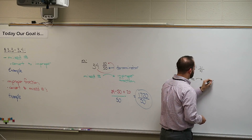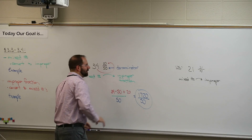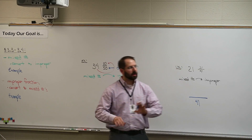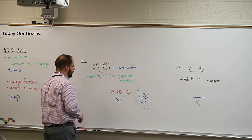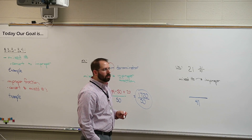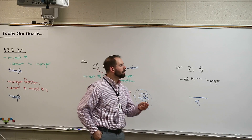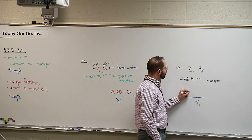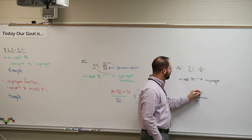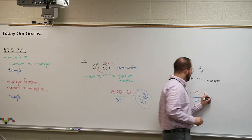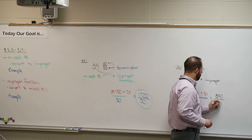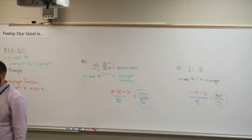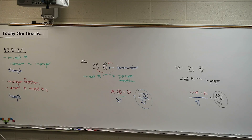What number goes on the bottom? 41 — the denominator stays the same. How do we get the top number? We use the same rule: multiply 21 times 41, then add 31. The result is 892 over 41. What makes that improper? The big number is on top — that's not normal. Usually the big number is on the bottom for a regular fraction.